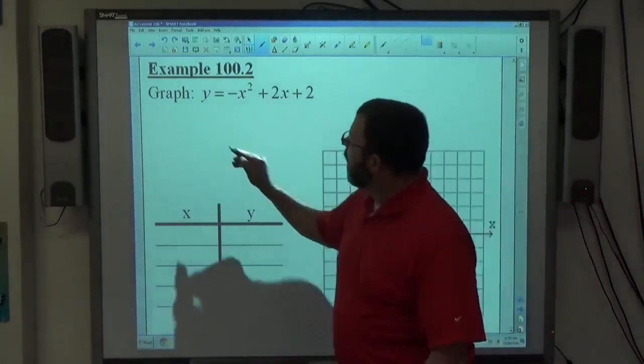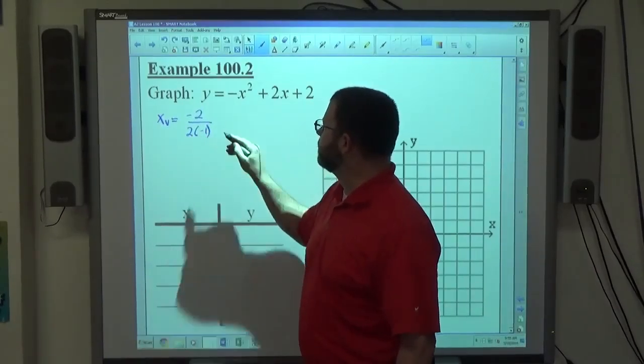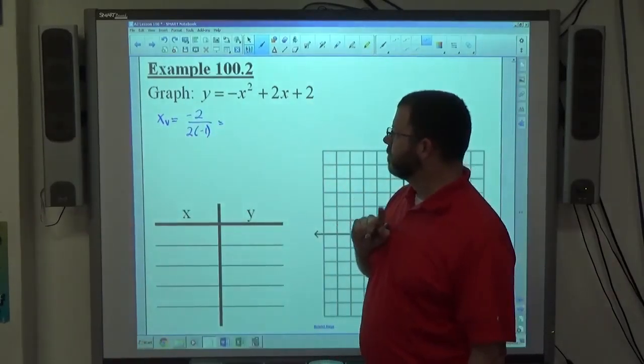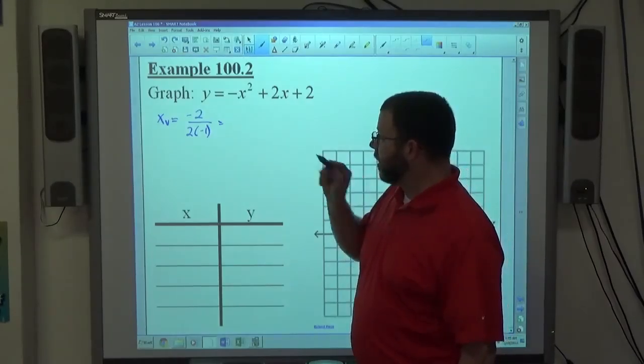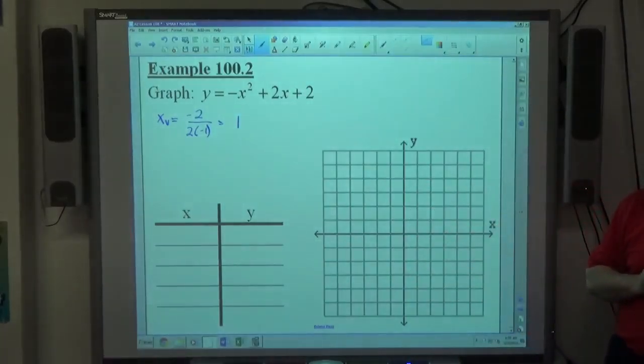First thing we do is x sub v equals negative b over 2a, negative 2 over 2 times negative 1. What does that make? Makes positive 1, right? Negative 2 on top, negative 2 on the bottom. Number divided by itself makes positive 1.